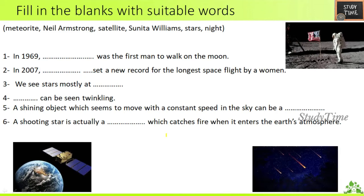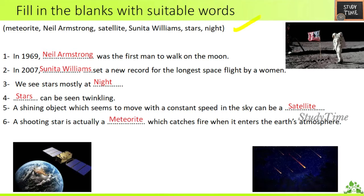Fill in the blanks: First — in 1969, Neil Armstrong was the first man to walk on the moon. Second — in 2007, Sunita Williams set a new record for the longest space flight by a woman. Third — we mostly see stars at night. Fourth — stars can be seen twinkling. Fifth — a shiny object which seems to move with a constant speed in the sky can be a satellite. A shooting star is actually a meteoroid which catches fire when it reaches the Earth's atmosphere.